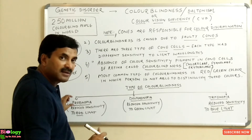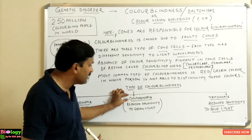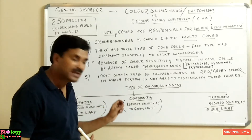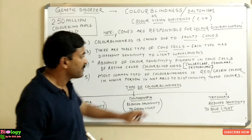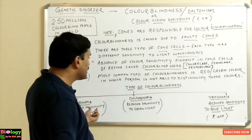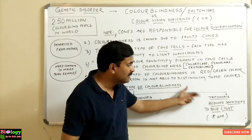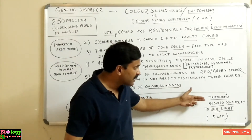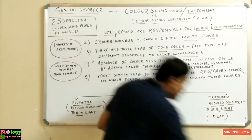Deuteranopia is green color colorblindness. Patients with deuteranopia have reduced sensitivity to green light, which causes green color blindness. The third type, tritanopia, is a rare one — the most common types are red and green colorblindness. Tritanopia is colorblindness for the blue color and is caused due to reduced sensitivity to blue light.